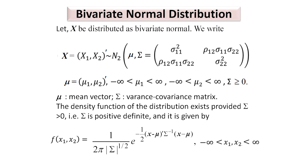Looking at the structure of sigma, the first element is sigma_11 squared, which is the variance of x1, and the last element, sigma_22 squared, is the variance of x2. The off-diagonal elements are equal to rho_12 * sigma_11 * sigma_22, where rho_12 denotes the correlation coefficient between x1 and x2. This sigma should be at least positive semi-definite.